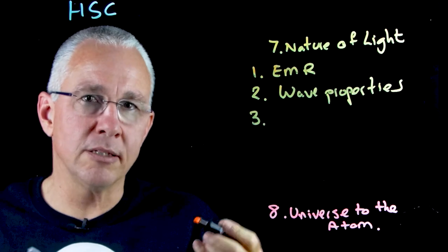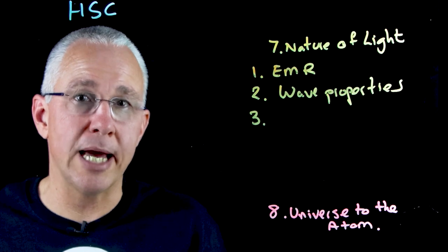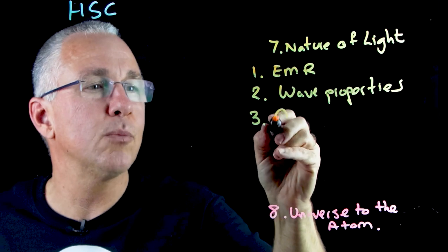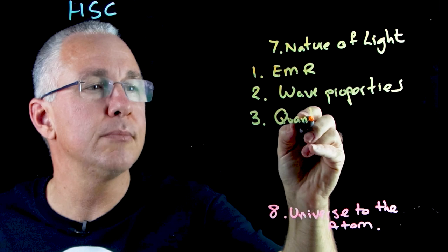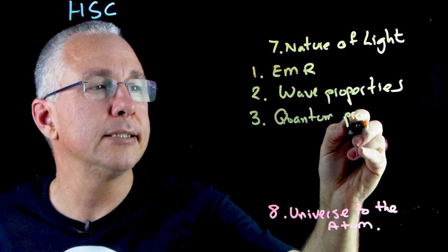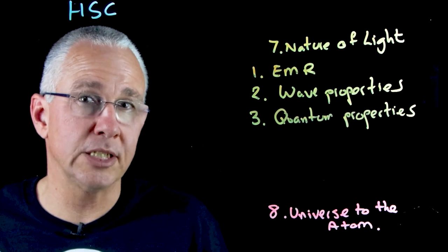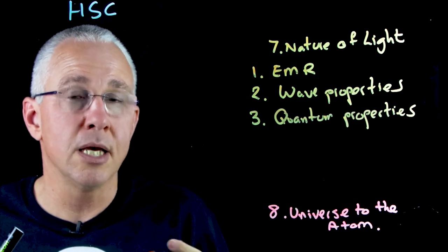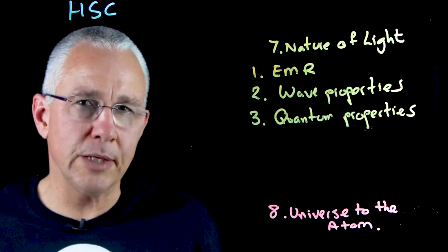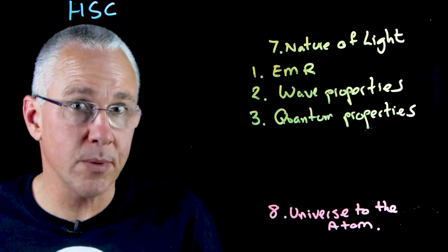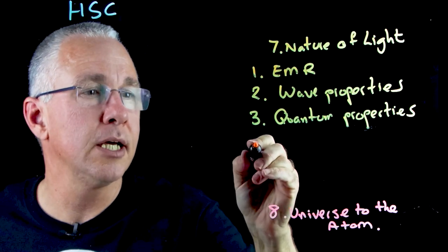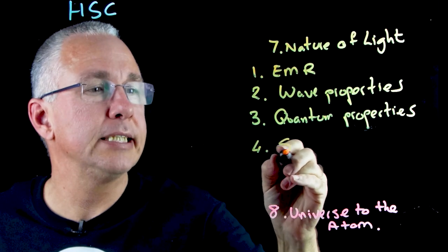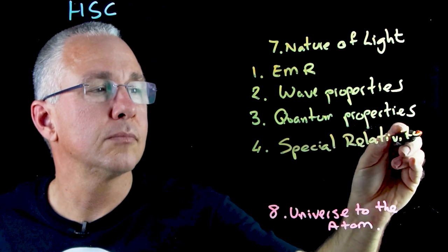We then delve into where light starts to behave differently to what was expected, exploring what we refer to as the quantum properties of light — in particular the photoelectric effect, which is the principle that underpins our solar cells. Finally, we look at the consequences of the speed of light being constant and explore Einstein's special theory of relativity.